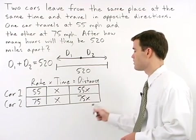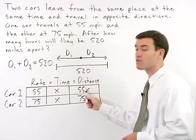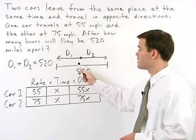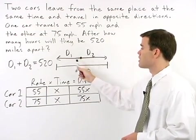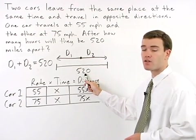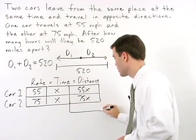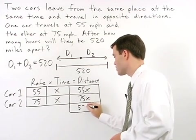So these two values represent the distances for the two cars. And remember from our picture that the distance for the two cars will add to 520. So we can set up a little box down below and put 520 in it.